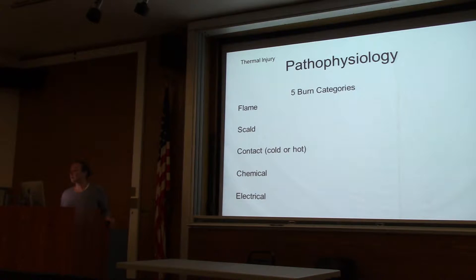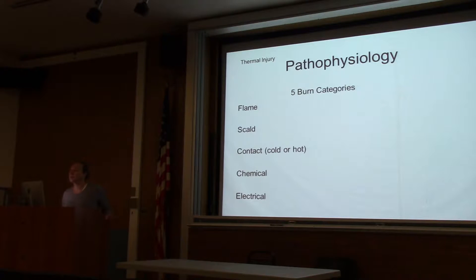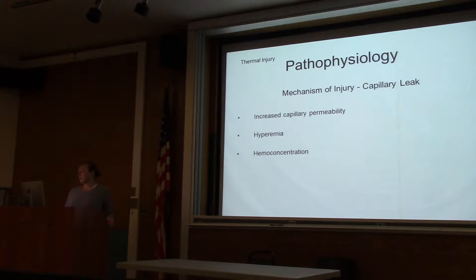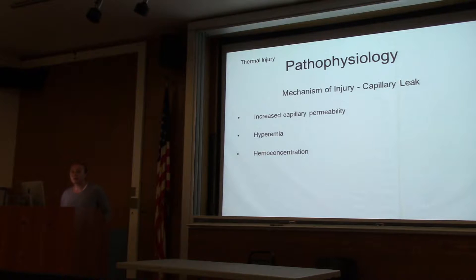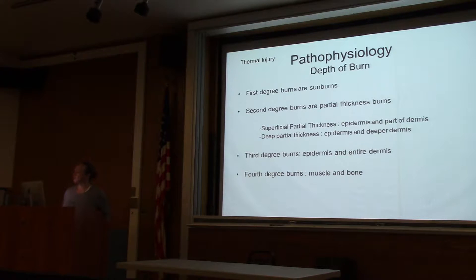There are five categories of burn injury: flame, scald, contact via hot or cold, chemical burns, and electrical burns. The mechanism is simply a capillary leak, so these patients need volumes of resuscitation. The skin becomes hyperemic and loses its ability to maintain body temperature. The blood becomes hemoconcentrated because fluid is extravasating into the interstitium.